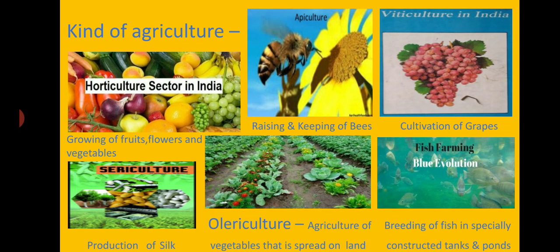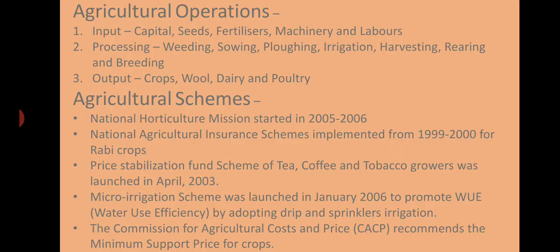There are different types of agriculture practices: horticulture focuses on growing fruits, flowers and vegetables; apiculture involves raising and keeping bees; viticulture is the cultivation of grapes; sericulture focuses on the production of silk. There is also vegetable farming spread on the land, and fish farming, where fishes are reared in specially constructed tanks and ponds.